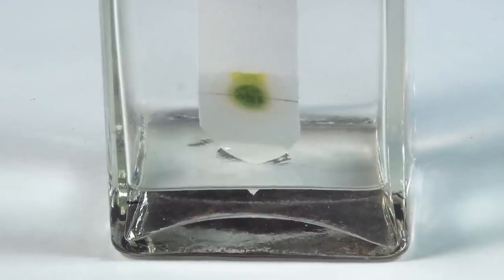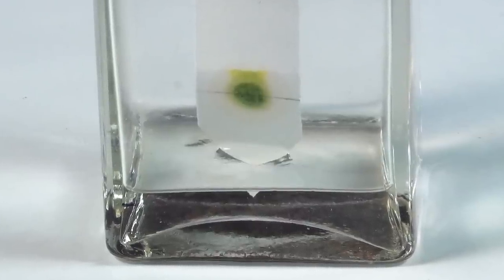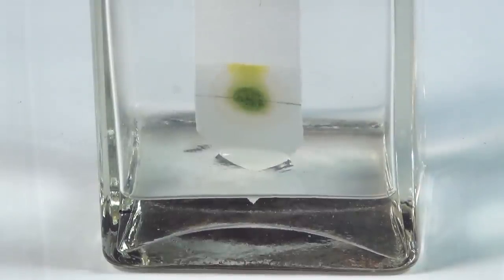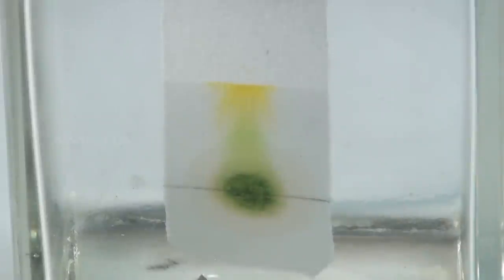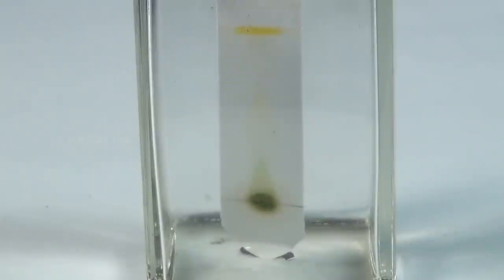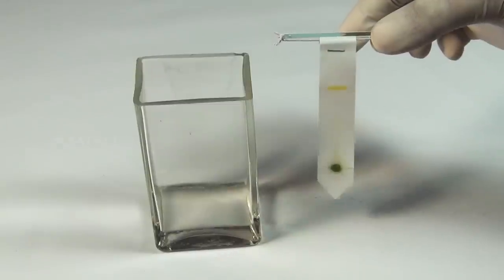Leave the chromatographic chamber undisturbed for some time. We can observe, as the solvent moves through the paper, it spreads the different pigments of the mixture in various distances. When the solvent rises above three-fourths of the way up the strip, remove the strip carefully and let it dry.